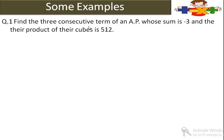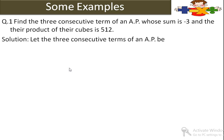Next question: Find the 3 consecutive terms of an AP whose sum is minus 3 and the product of their cubes is 512. हमें 3 consecutive terms suppose करना है. Let the 3 consecutive terms be a minus d, a, and a plus d, where a is the first term and d is the common difference.